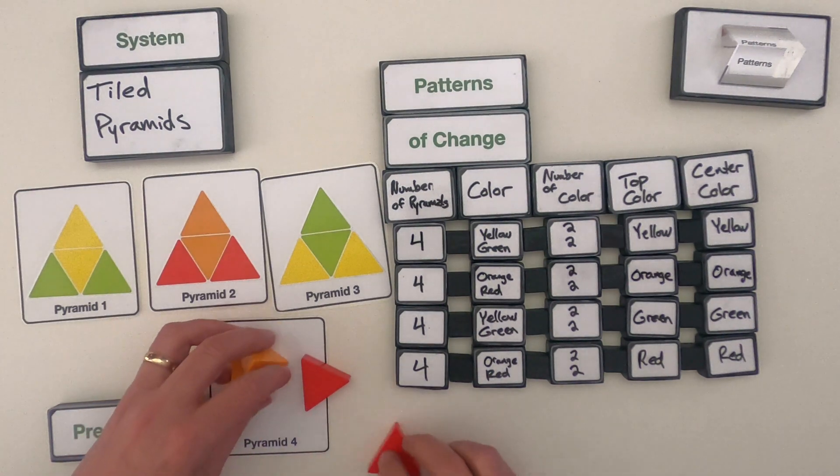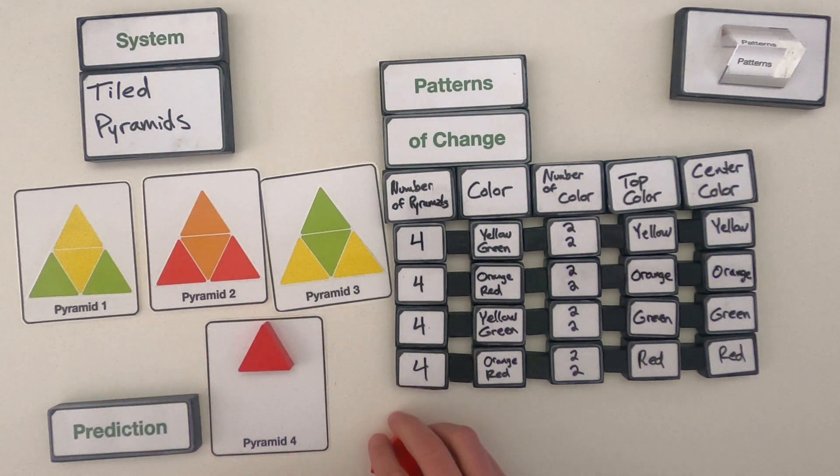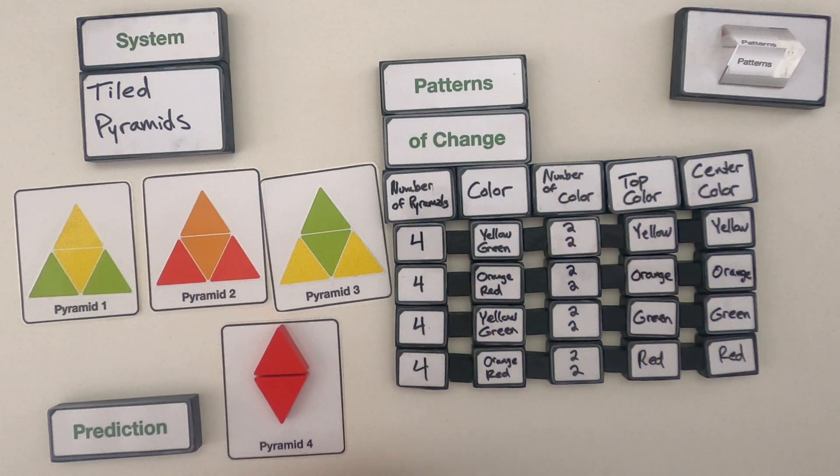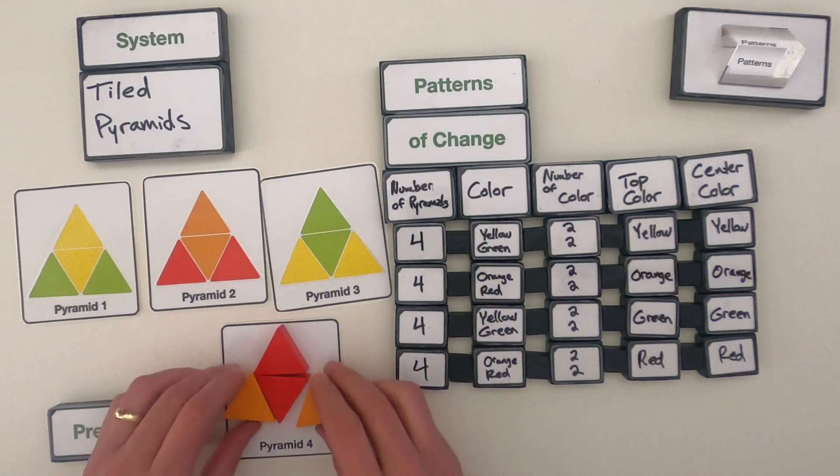The top color is going to be red. The center color, according to my pattern, is going to be red. And that leaves these two to be the ones on the side.